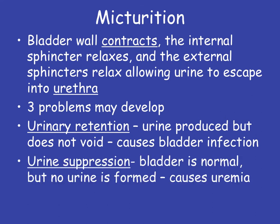The second problem is urine suppression. This is where our bladder is normal, but for whatever reason, no urine is formed. This causes a condition called uremia — basically the levels of uric acid, which is our metabolic byproduct that we're trying to filter out, actually reach toxic levels within the blood. The filtration, reabsorption, and secretion processes within our kidneys are not functioning properly. So urine suppression is not a bladder problem like urinary retention — it's actually a kidney issue.